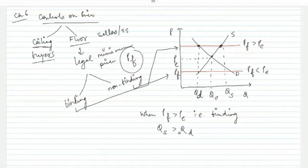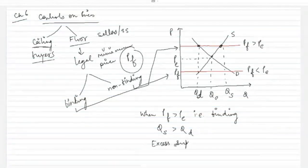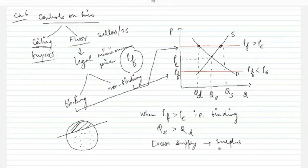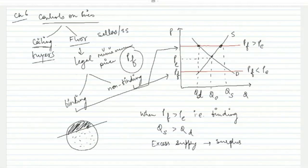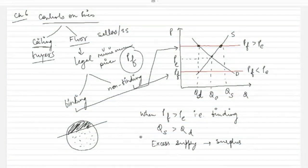This means that in the market, you have created excess supply — a surplus of the commodity. As much total commodity as there is, you are only selling a portion of it. The rest remains unsold with the seller. So the price floor policy, which was meant to help sellers and put them in a beneficial position, is actually not achieving that goal — sellers are not selling their entire product.